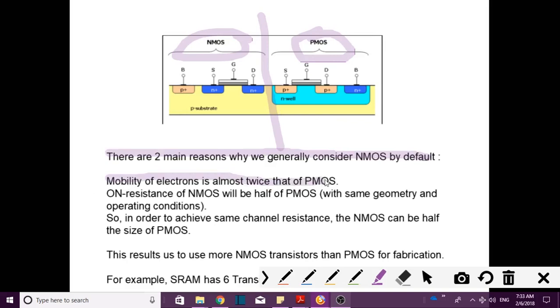Mobility of electrons is almost twice that of PMOS. If there is an NMOS and PMOS, then definitely we can say that μn is equal to two times μp, just for assumption I am telling. Which means it is two times faster.